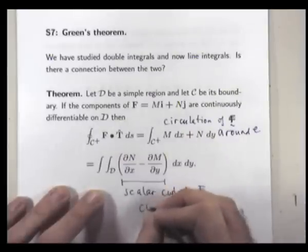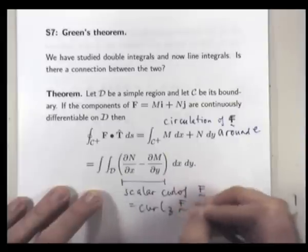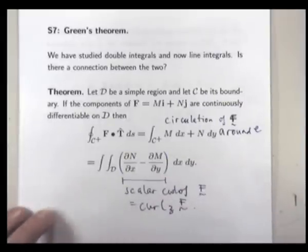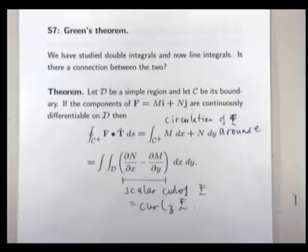Now we both know that curl and circulation have to do with swirling and rotations. Green's theorem gives yet another link between circulation and curl.